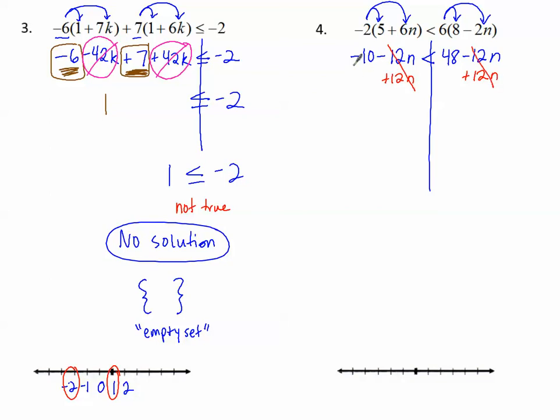But notice that there are the inverses on both sides. So the n's are gone all together. No n's over here, just negative 10. No n's over here, just 48. Now this time, negative 10 less than 48. This statement is a true statement. Negative 10 is less than 48. So if the variable is gone and we end up with a true statement with numbers, then our answer is all real numbers. Remember we had that with equations.